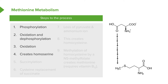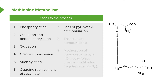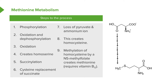Homoserine was an intermediate in the synthesis of cysteine from methionine. Succinylation involves the addition of a succinate molecule. The cysteine is replacing the succinate in the next step of the process. There is then loss of a pyruvate and an ammonium ion to produce homocysteine. Homocysteine was the molecule whose concentration is a problem in the production of cysteine. Finally, methylation of the homocysteine by an N5-methylfolate creates methionine.